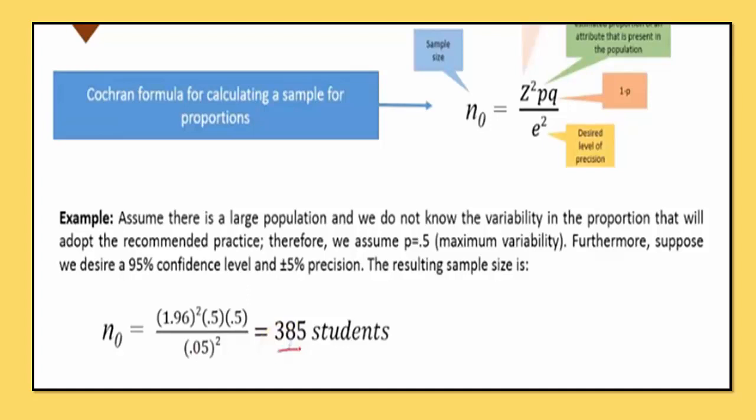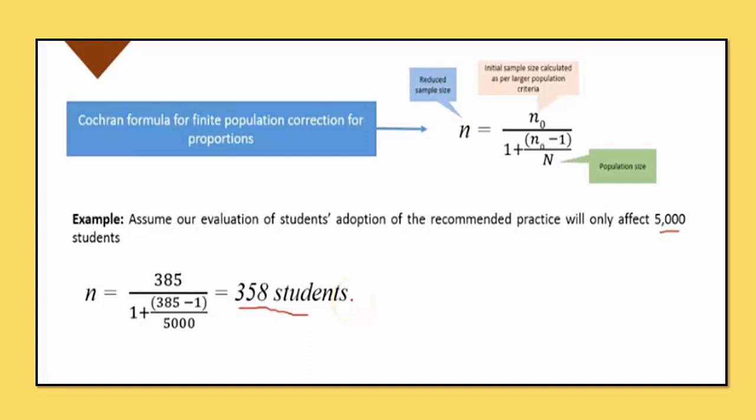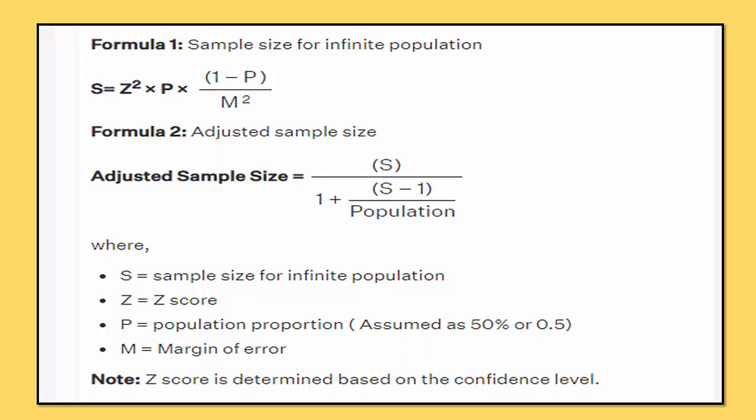Now we are going to use the adjusted sample size formula: n = n₀ / (1 + (n₀ − 1) / N), where n₀ is the initial calculated sample and N is the known population. Since they have recommended a population of 5000 and our initial sample n₀ = 385, substituting gives: n = 385 / (1 + (385 − 1) / 5000), which equals approximately 358.